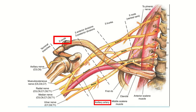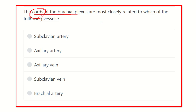Welcome to another question and answer session. The question is: the cords of the brachial plexus are most closely related to which of the following vessels? The options are subclavian artery, axillary artery, axillary vein, subclavian vein, and brachial artery.